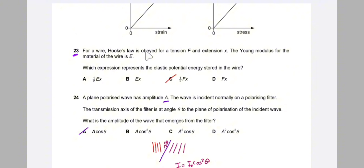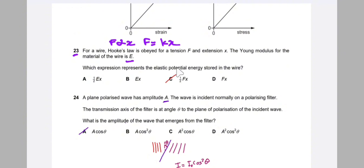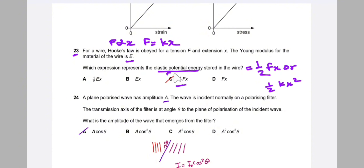Question 23: for a wire obeying Hooke's law with extension x, Young modulus E. Elastic potential energy stored = ½Fx (or equivalently ½kx²). Option C shows ½Fx, which matches the elastic potential energy formula. The correct answer is C.